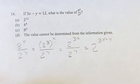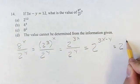And we're given that 3x minus y is equal to 12, so this is just 2 to the 12th.